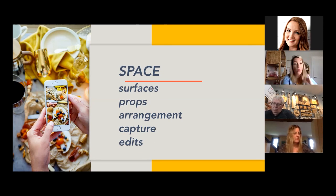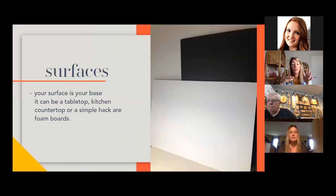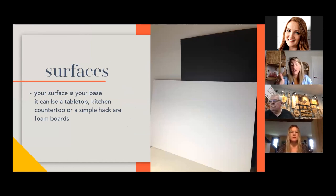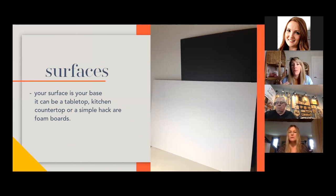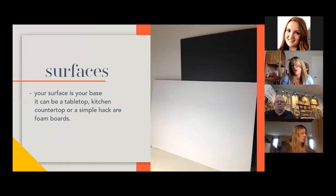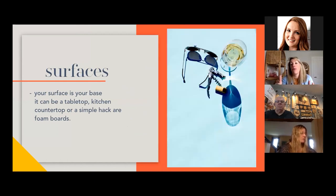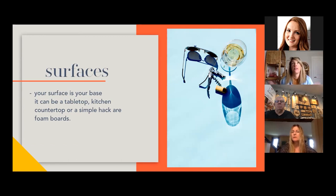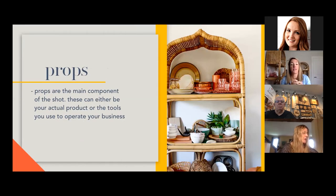For Capturing, most of the images I use on my own social are with my iPhone. Then Edits, because editing is a really important process. For surfaces, it's your base — your tabletop, your kitchen countertop. These foam boards are from the dollar store; you can even get Bristol board colored sheets. A black backdrop sets a more dark and moody tone, white gives more light and airy. For example, this shot of mine on a light pale blue let me bring in some blues, and of course a glass of wine.